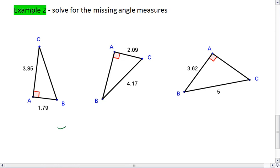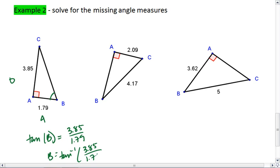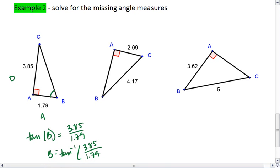Alright, let's look at this first one. I'll go ahead and solve for angle B first. I'll label, so I know here, because I have adjacent and opposite, I'm going to use tangent. Tangent of B equals 3.85 over 1.79. So B equals tan inverse of 3.85 over 1.79.